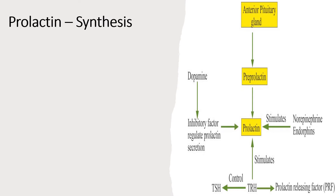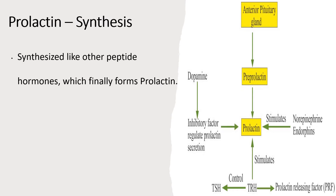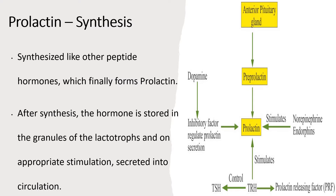Prolactin synthesis: prolactin is synthesized like other peptide hormones, from pre-pro-prolactin, which forms pro-prolactin, which finally forms prolactin. After synthesis, the hormone is stored in the granules of the lactotrophs, and upon appropriate stimulation, the stored prolactin is secreted into the circulation.